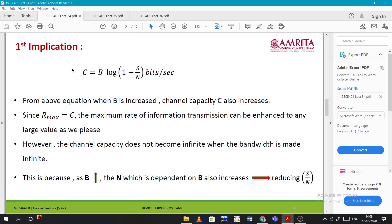Coming to the first implication: when we observe the equation, as B increases, channel capacity C also increases since B and C are directly proportional. Since R_max = C, the maximum rate of information transmission can be enhanced to any value we please.